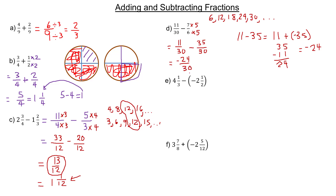That's not improper because 24 is smaller than 30, so we don't have to worry about changing it to a mixed number. But it can reduce like the first one. If you look at 24 and 30, try to think of a number that they both divide evenly by. They're both even, so two goes into them.